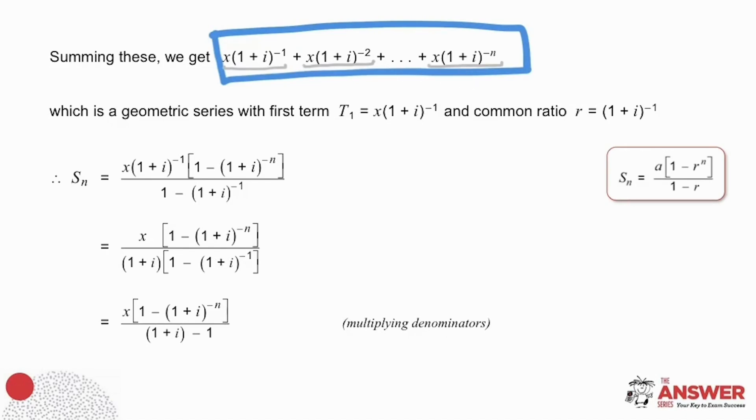Can you see here that what this creates is a geometric series, where the first term is x times the compounding factor to the negative 1, and the common ratio is the compounding factor to the negative 1. Now, if we remember the sum formula we referenced in the beginning of the video, we can replace a with x bracket 1 plus i to the negative 1, and we can replace r in both the numerator and the denominator with the common ratio, bracket 1 plus i to the negative 1. The exponent here then becomes negative n.